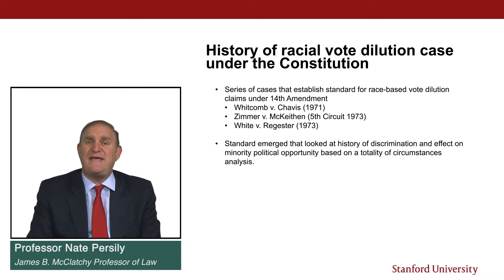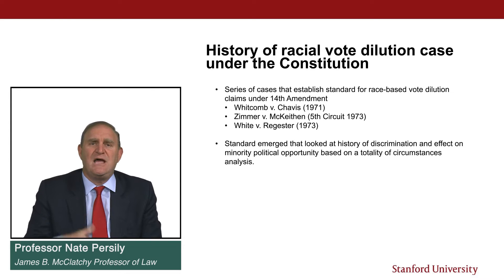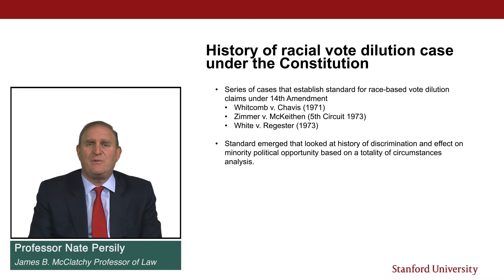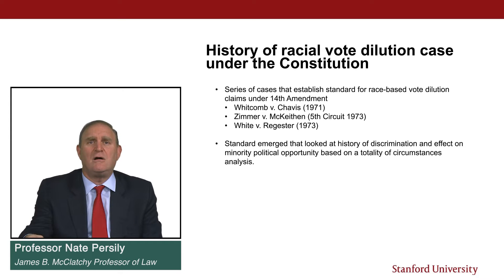What emerged from the pre-Mobile versus Bolden cases was a standard that looked at the history of discrimination and the effect on minority political opportunity based on a totality of circumstances analysis. You looked at the voting rights situation for racial minorities in a particular jurisdiction and asked whether dilutive redistricting or at-large voting systems prevented them from electing their candidates of choice. Through that kind of intense historical and statistical analysis, the court might decide that a redistricting plan or at-large election scheme violated the voting rights of racial minorities.